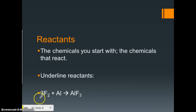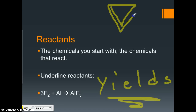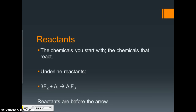Underline the reactants. We have three difluorides plus aluminum, which yields aluminum fluoride. The arrow is pronounced 'yields' — you may have noticed I didn't say arrow or equals, I used the word yields. You've probably heard this word when driving, like a yield sign. In that case it means slow down; in chemistry, yield means to make or produce. The reactants are before the arrow — it's what you start with, so it would be the three difluorides plus the aluminum.